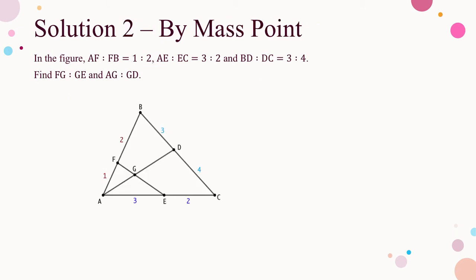Now let me solve the problem again by mass point. The configuration of this triangle is different from the triangles in my previous videos on mass point — the line segment AD passes through the vertex, but EF does not. To use the technique of mass point, first identify the center of mass. For this triangle, G is the point inside the triangle and it is the point of intersection of AD and EF, so G is the center of mass.